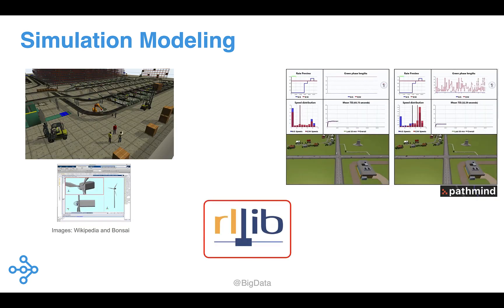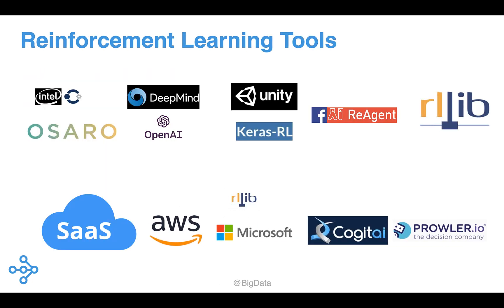Through San Francisco Bay Area startups Pathmind and Bonsai — now part of Microsoft — I've already seen early glimpses of how RL is being incorporated into simulation modeling software. Both Pathmind and Bonsai use RLlib, a very popular open-source library for reinforcement learning built on top of Ray. We are beginning to see more tools, both open source and software as a service, for reinforcement learning. These tools pave the way for practitioners who want to experiment with RL but may not have the expertise to build their own suite of tools.